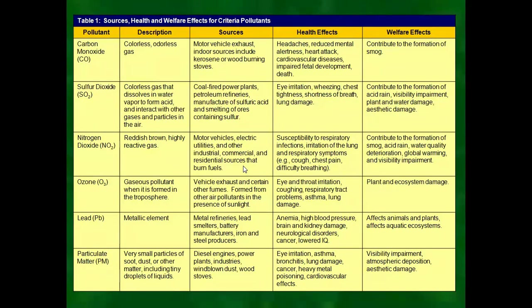Ozone is a gaseous pollutant formed in the troposphere from vehicle exhaust and other fumes in the presence of sunlight. Effects include eye irritation, throat irritation, coughing, respiratory tract problems, and asthma. These are default problems caused by air pollution in surrounding areas. The main impact of ozone is on plants and ecosystem damage — if the ecosystem is disturbed, it is very difficult and potentially irreparable for humans.